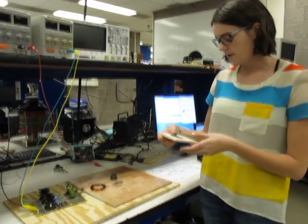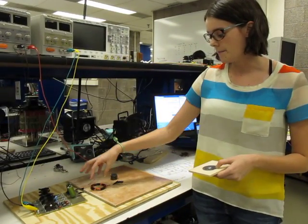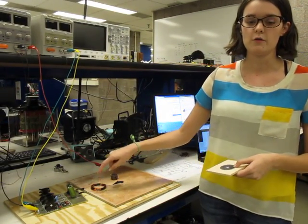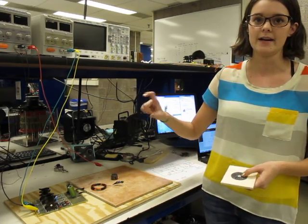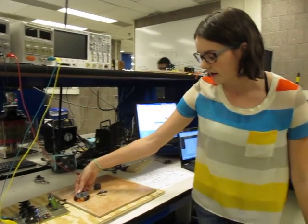The way an induction heater works is basically you have an alternating current going through a coil of wire and that creates a switching magnetic field. Then once you get another piece of metal near it,